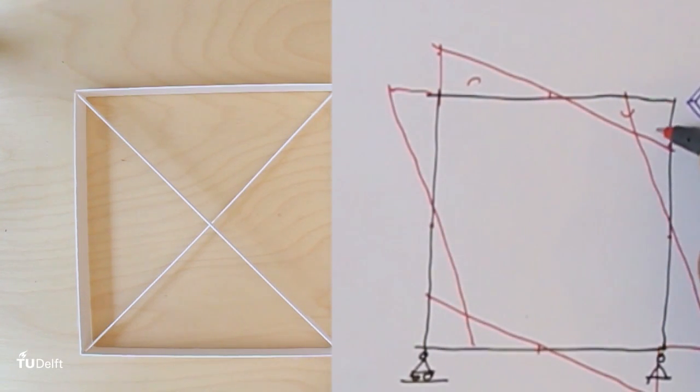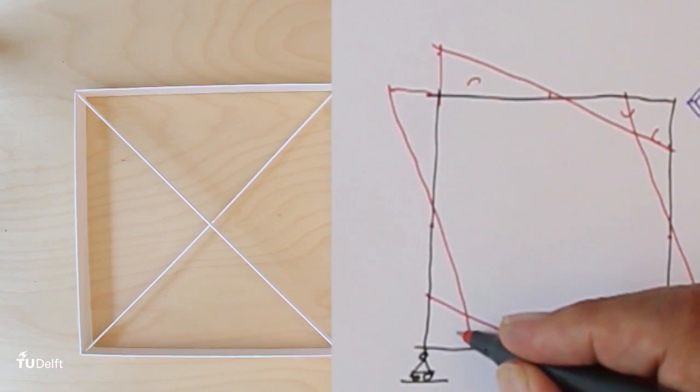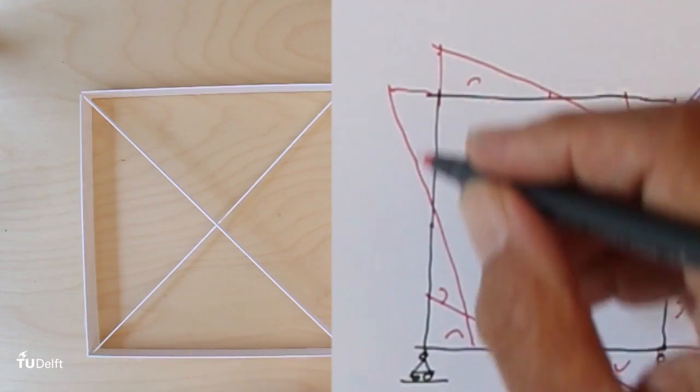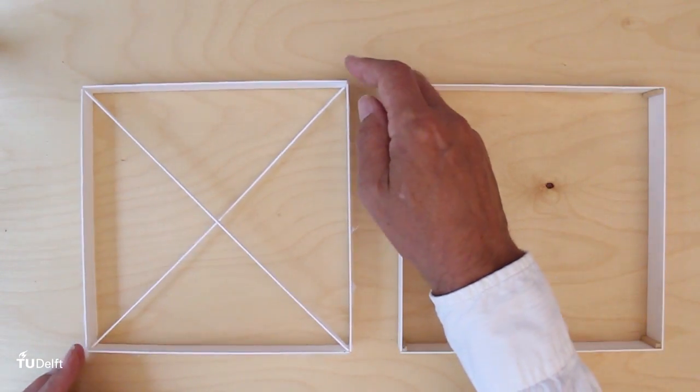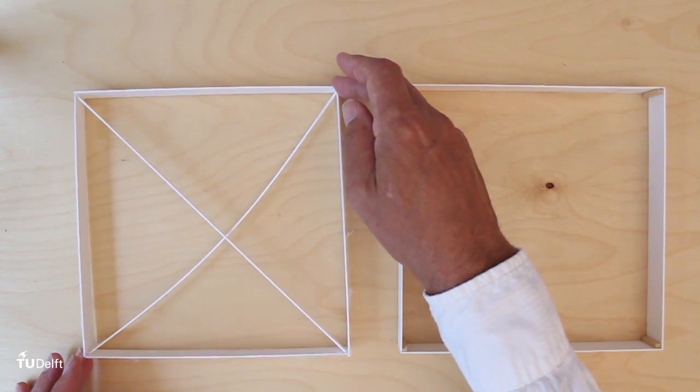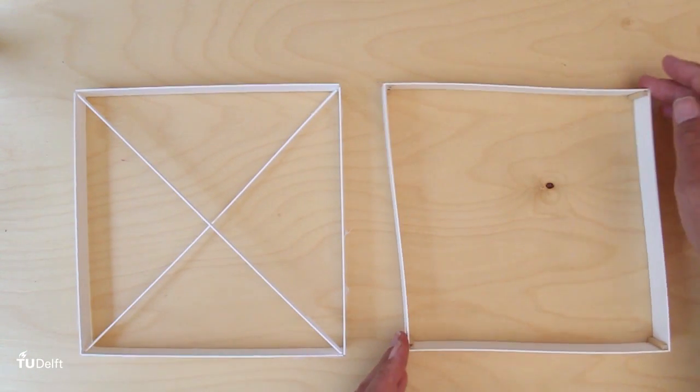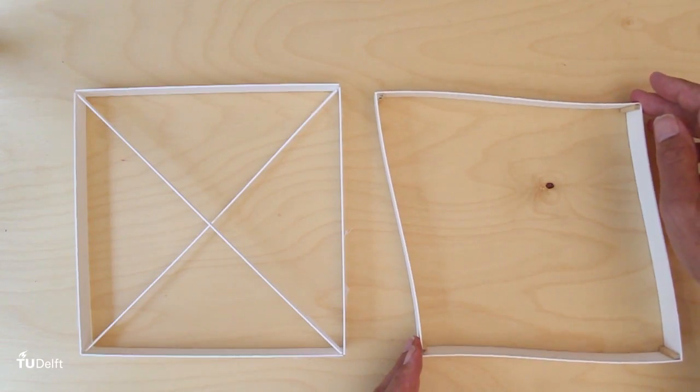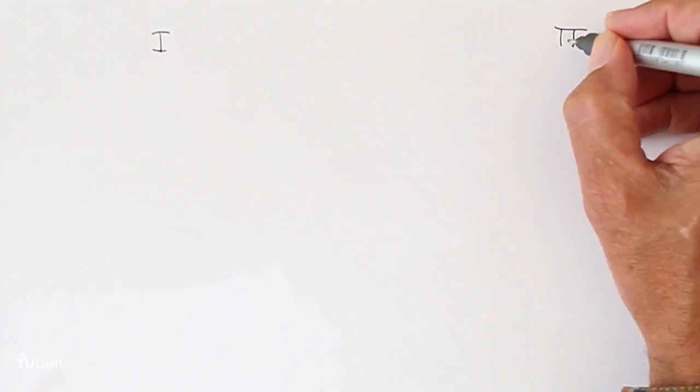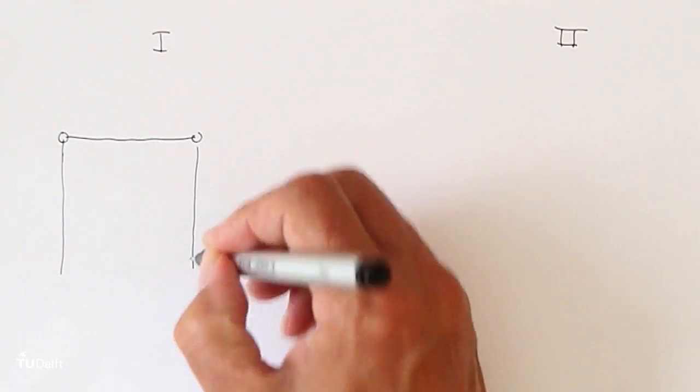To make a rigid frame as stiff as a brace frame requires much more material. So the solution is less economical, and not just a bit.